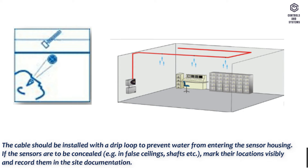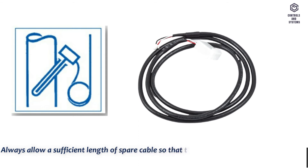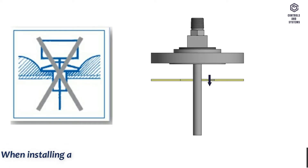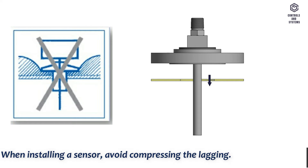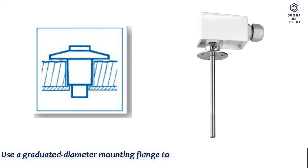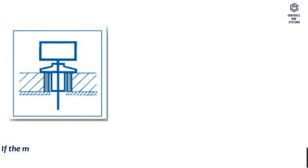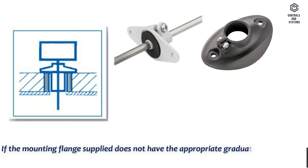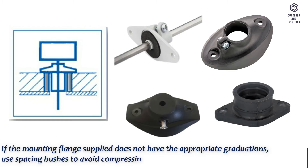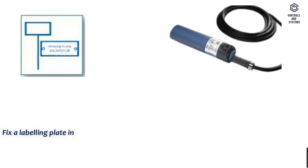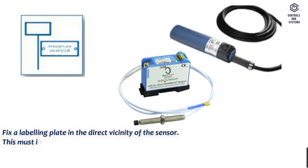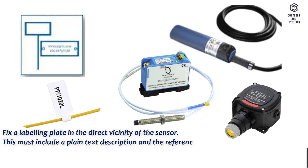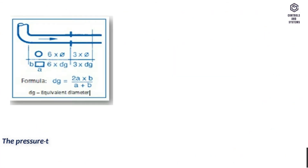Always allow a sufficient length of spare cable so that the sensor can be removed at any time without disconnecting the wiring. When installing a sensor, avoid compressing the lagging; use a graduated diameter mounting flange to avoid this. If the mounting flange supplied does not have the appropriate graduations, use spacing bushes to avoid compressing the lagging. Fix a labeling plate in the direct vicinity of the sensor — this must include a plain text description and the reference number which appears in the plan schematic. Do not attach the label to the device itself.